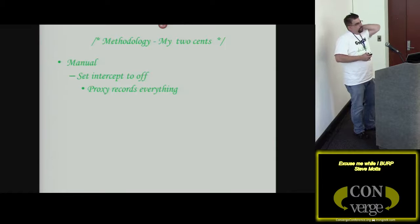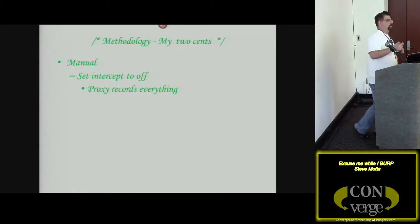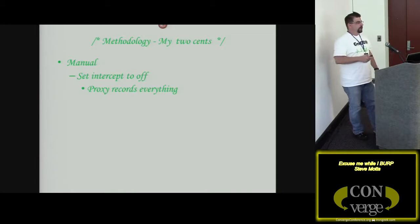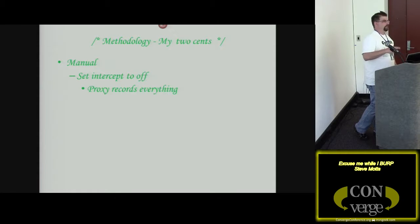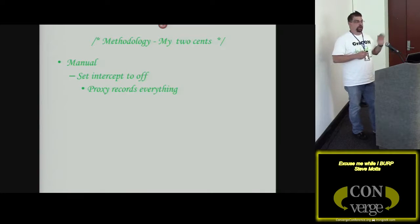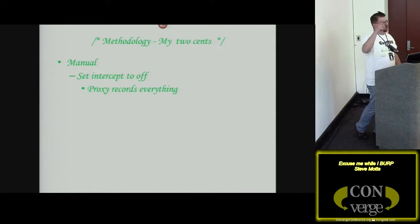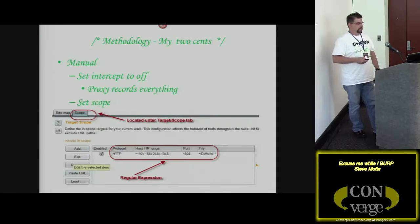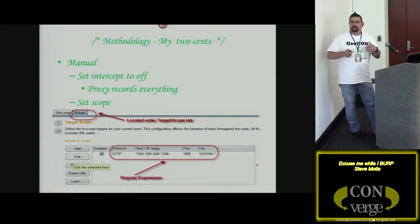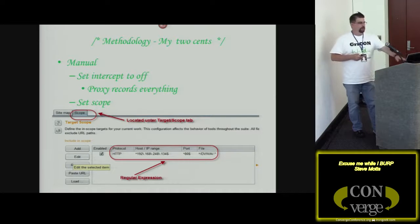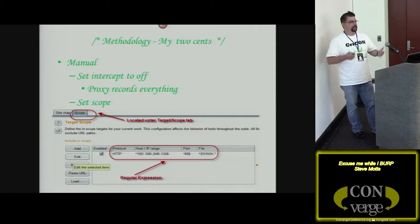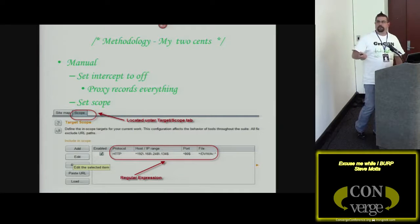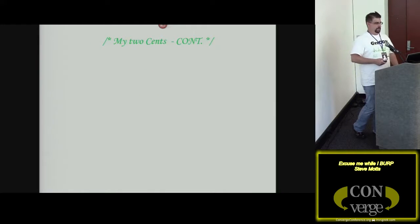Methodology — manual: turn interception proxy off initially. By default Burp will automatically stop all requests until you forward them. Leaving it on at home is interesting though — you'll see other applications on your system trying to communicate out that you had no idea about, like Google constantly trying to communicate. Set scope as I mentioned — it's done on the scope page. You don't need to know regex; it's smart enough that when you go to a website, right-click and say 'set scope,' it creates all the regex for you.